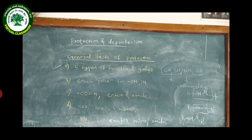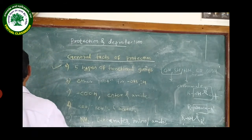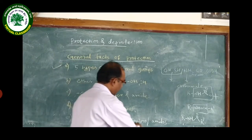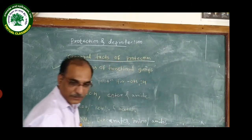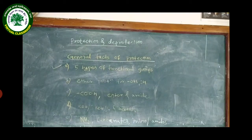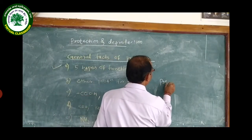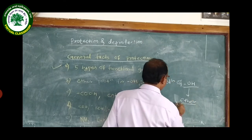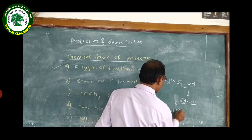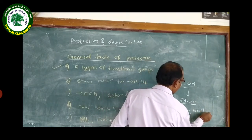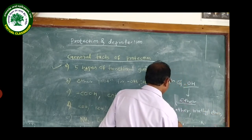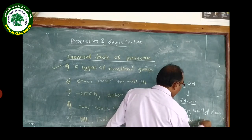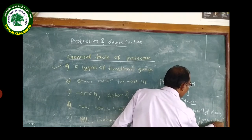In the next lecture, we will study about the protection of OH first. Protection of OH can be done using different types of ethers: benzyl ether, methyl ether, silyl ether, and others. These will be studied in detail in the next lecture.